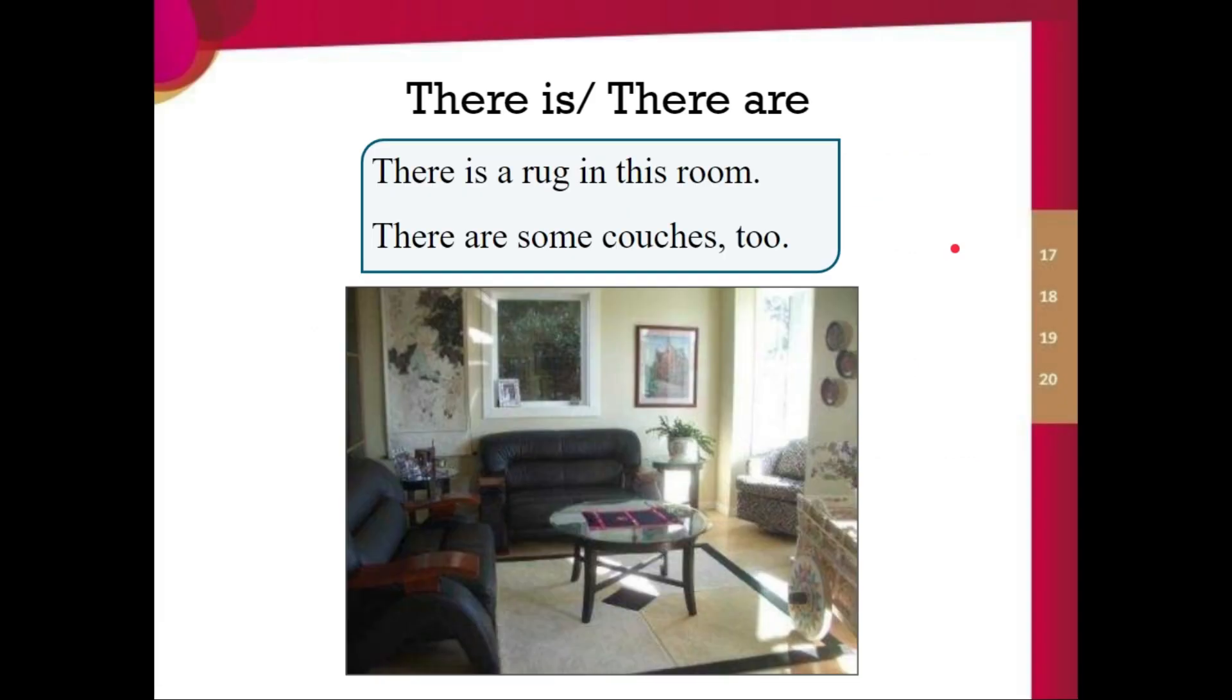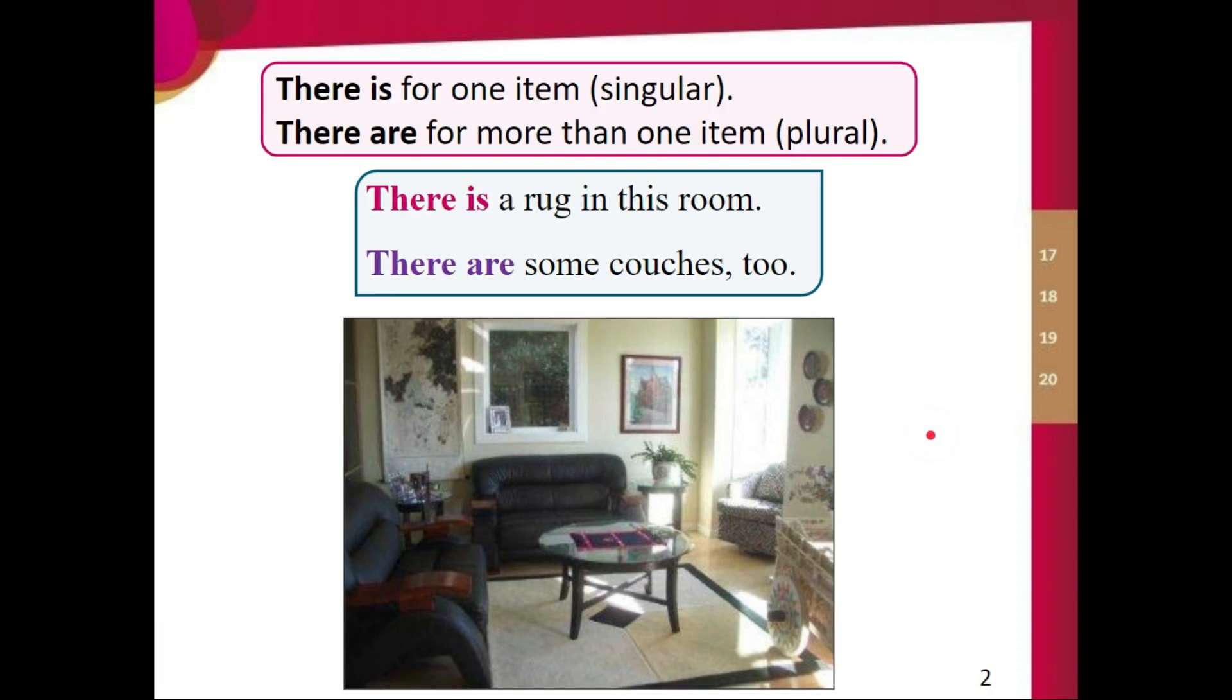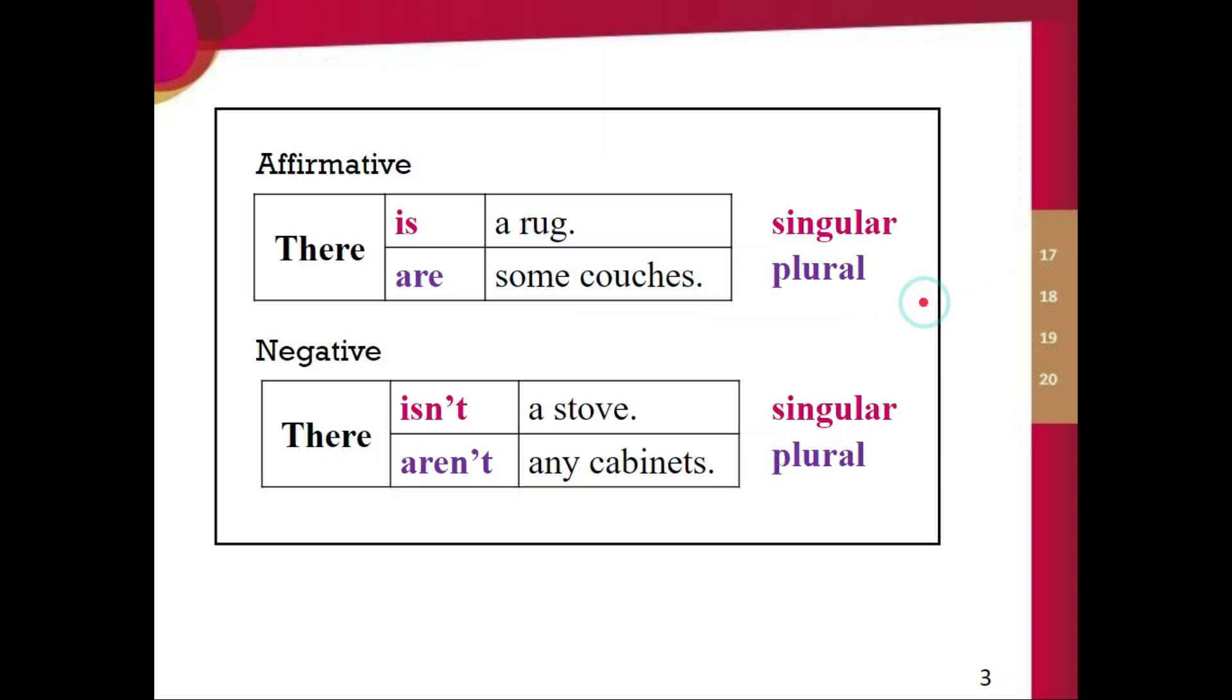There is and there are. In this picture, we can say we can see there is a rug in this room. Only one. It's right here. And there are some couches too. One, two, maybe three couches. So there is is for one item is singular. There are for more than one item is plural. Again, there is a rug in this room. There are some couches too.